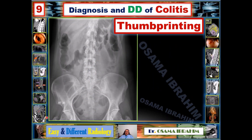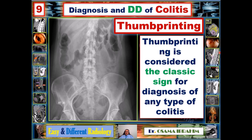Here is another example of an abdominal X-ray showing thumb printing due to thickening of the haustra projecting into the colon. This area shows thumb printing, and this area also shows thumb printing. As mentioned, thumb printing is considered the classic sign for the diagnosis of any type of colitis discussed in the previous slides.